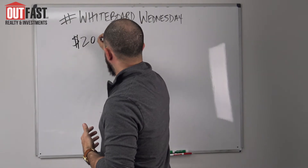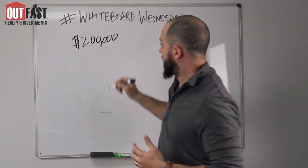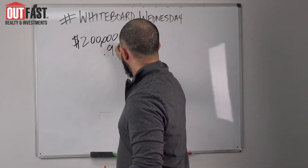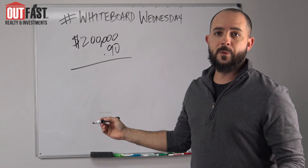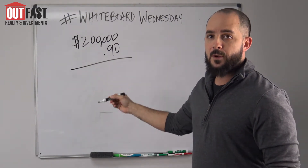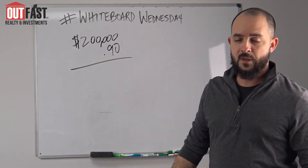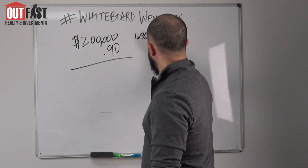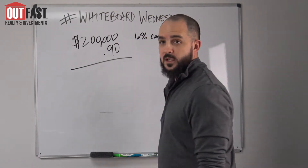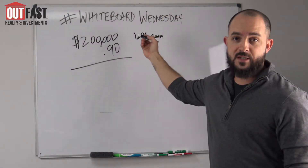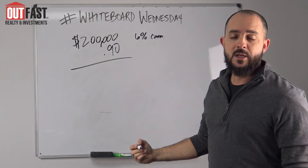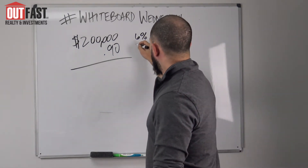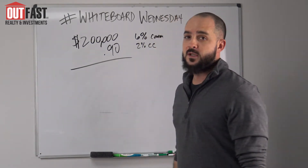Remember, the deal was going to sell for $200,000. Here's how you determine the net profit on this deal: multiply the after-repaired value of the property by 90%. Why 90%? Let's break that down. You're going to pay 6% in commissions to the real estate agents — 3% to your listing agent and 3% to the buying agent to get that deal under contract on the resale.